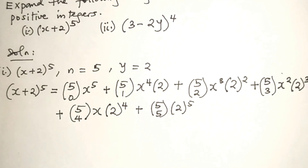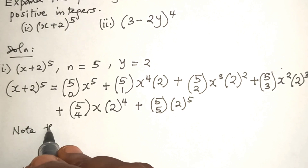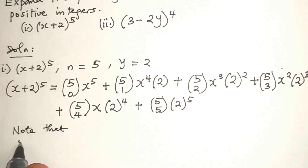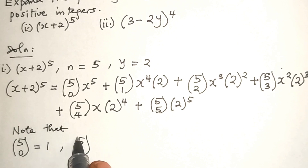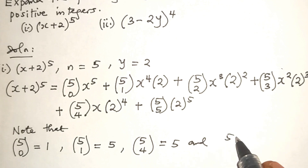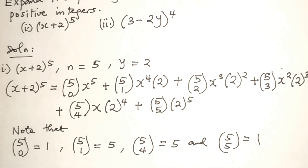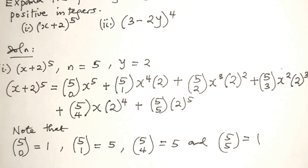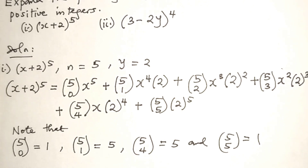Now let's note that 5-choose-0 is equal to 1, 5-choose-1 is equal to 5, 5-choose-4 is equal to 5, and 5-choose-5 is equal to 1. Please check the video on combination in the description of this video — the link is there. You can look at that video on combination so it will be easier to understand how these results were obtained. We are left with only 5-choose-2 and 5-choose-3.